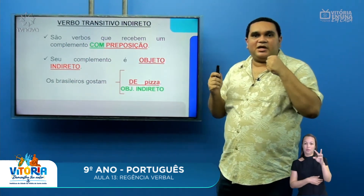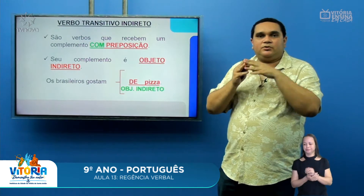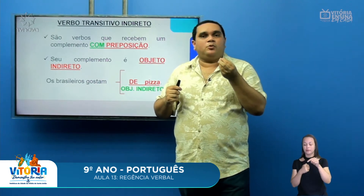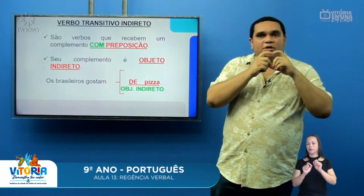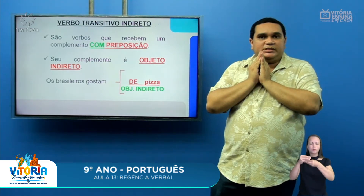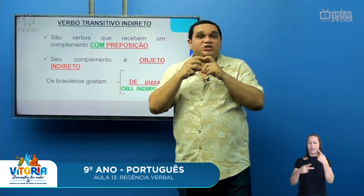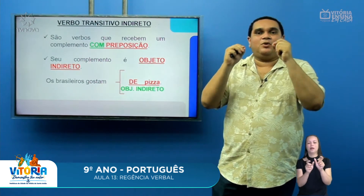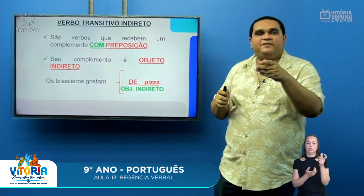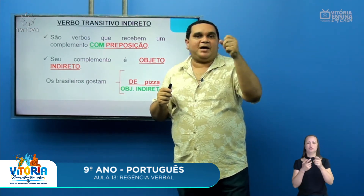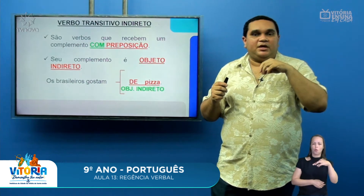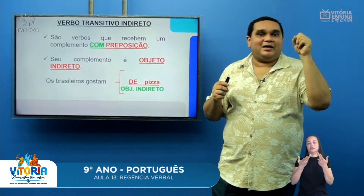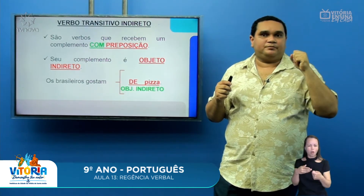O verbo transitivo indireto também vai precisar de um complemento. A grande diferença é que entre o verbo e o seu complemento vai aparecer uma preposição. As preposições são pequenas palavras que ligam um termo a outro — que fazem a conexão, a ligação entre um termo e outro na frase. Exemplos de preposição: para, em, com, por, contra, na, nas, no, da, das, do, dos, de, entre outras.